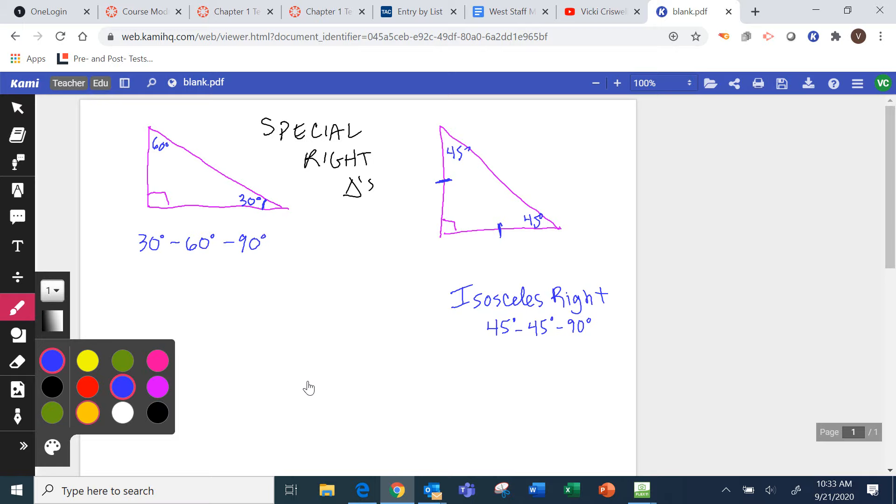So what the heck am I talking about? I'm talking about side lengths. Basically we're looking at the ratio of the side lengths. I'm going to look at the isosceles right triangle first.